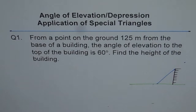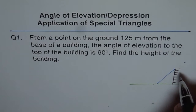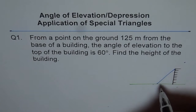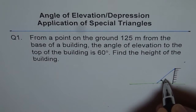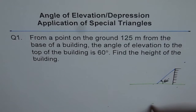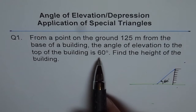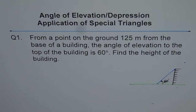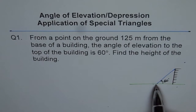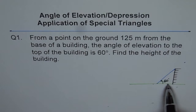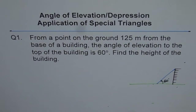The angle of elevation is the angle you make with the horizontal when looking upwards. So when you look upward, this angle between the horizontal and your line of sight is called the angle of elevation. Here that angle is given as 60 degrees.